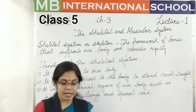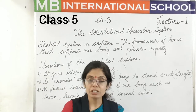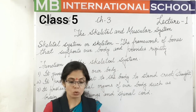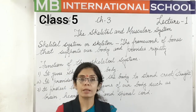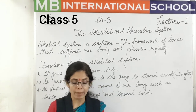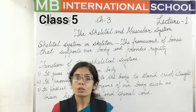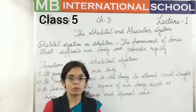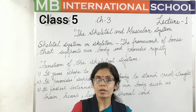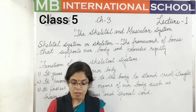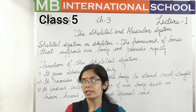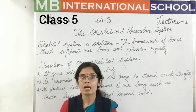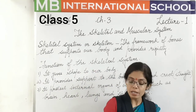The skeleton of an adult human being has 206 bones. As the body develops and grows, bones join together and decrease in number, so the total number of bones in an adult is 206.